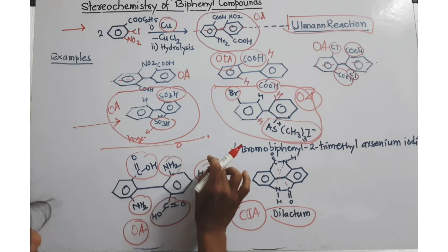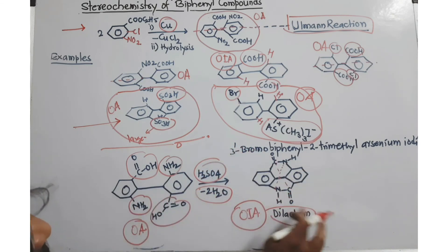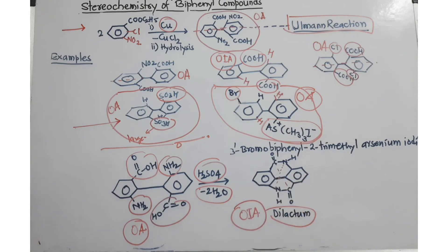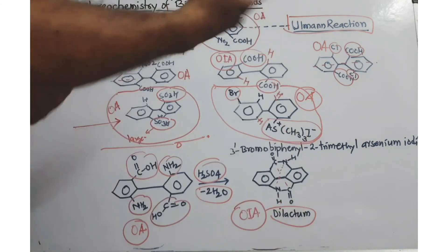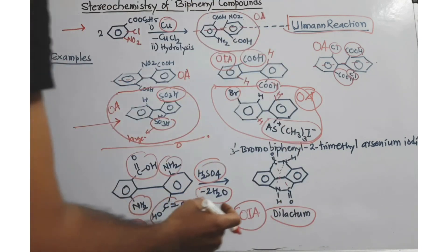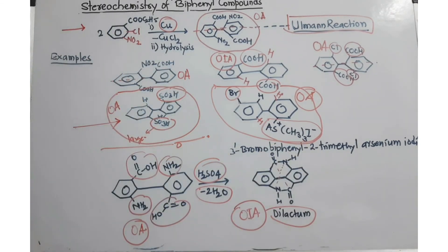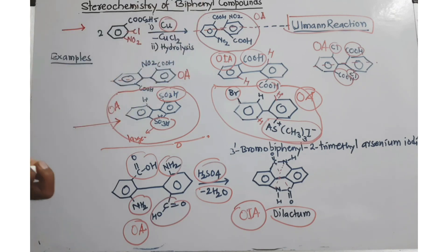So, the same compound in the presence of sulfuric acid becomes optically inactive because it is converted to a dilactam, which has both a center of symmetry and coplanar rings with no inclination between them. You must remember all the required conditions for optical activity in biphenyl compounds.